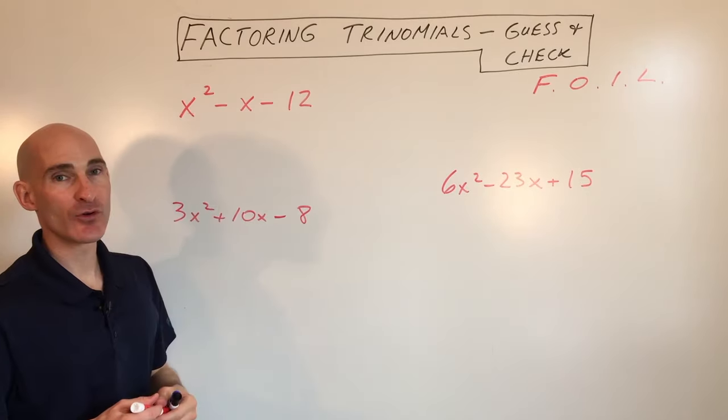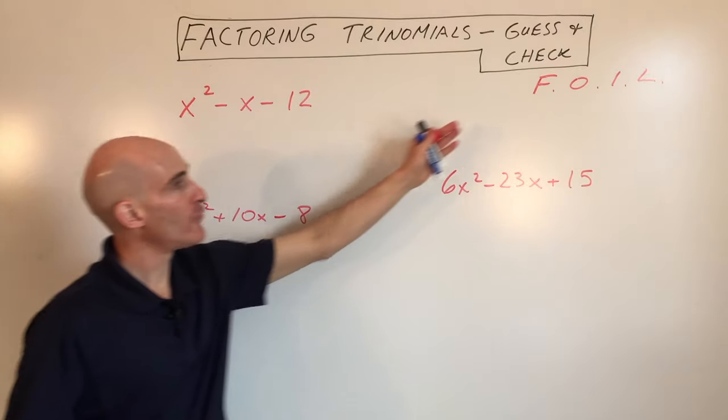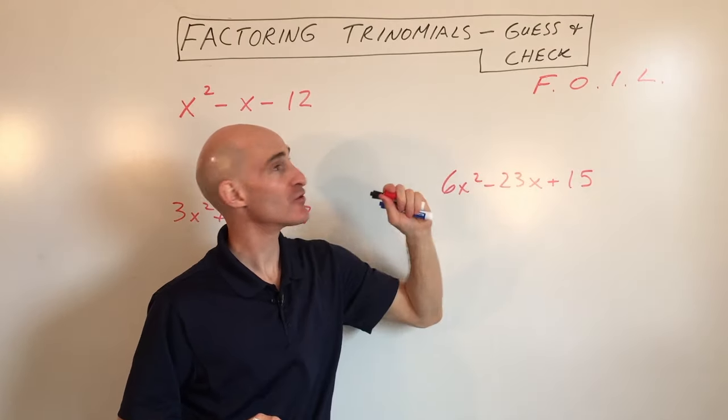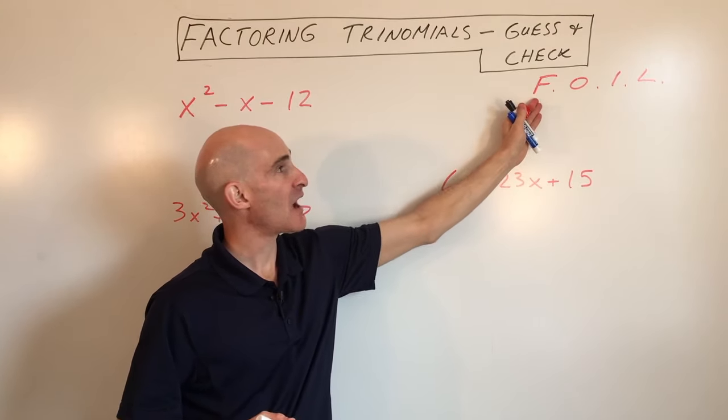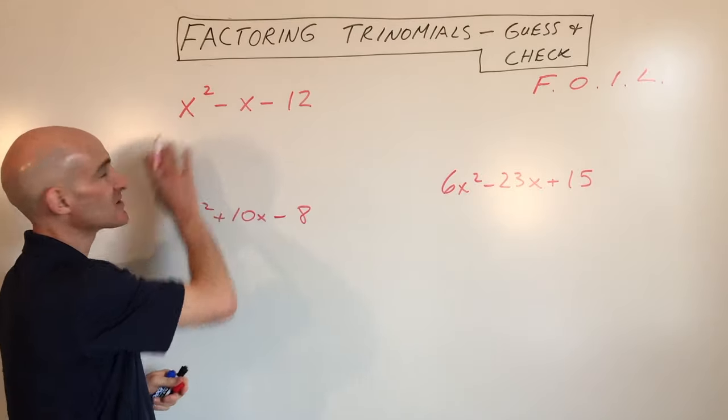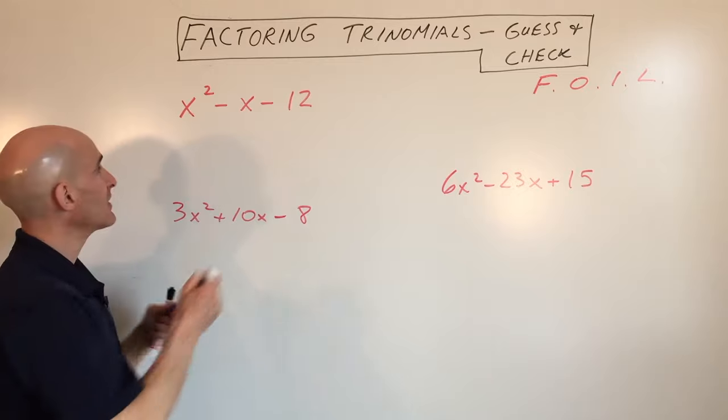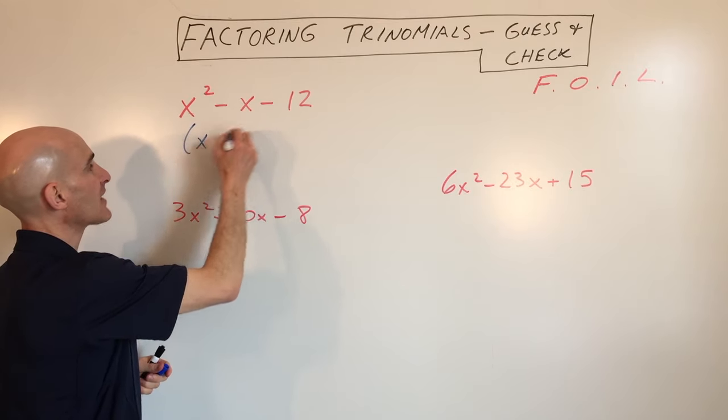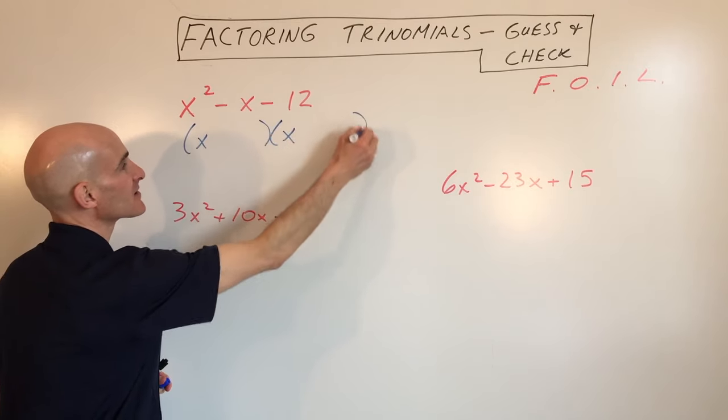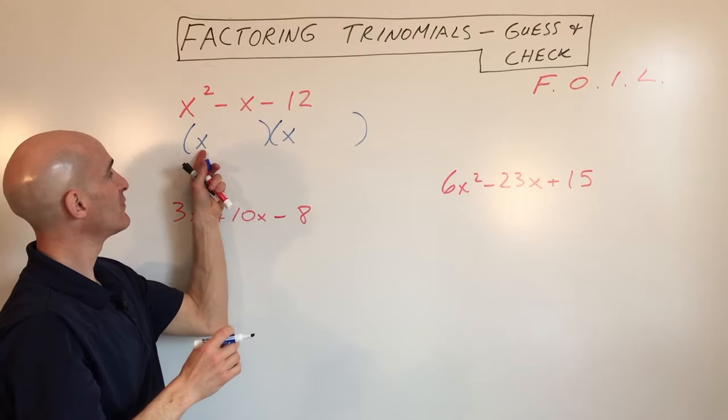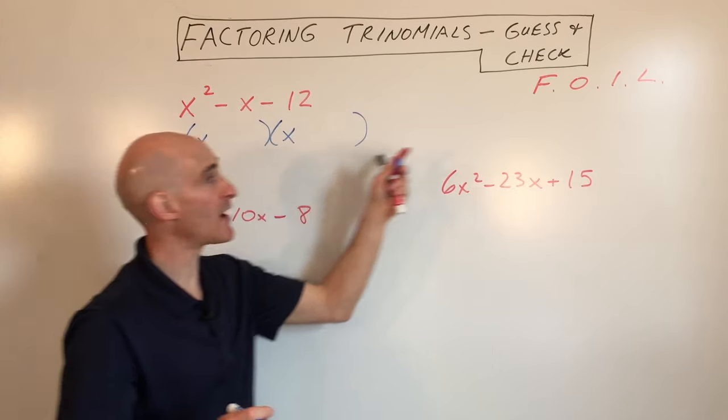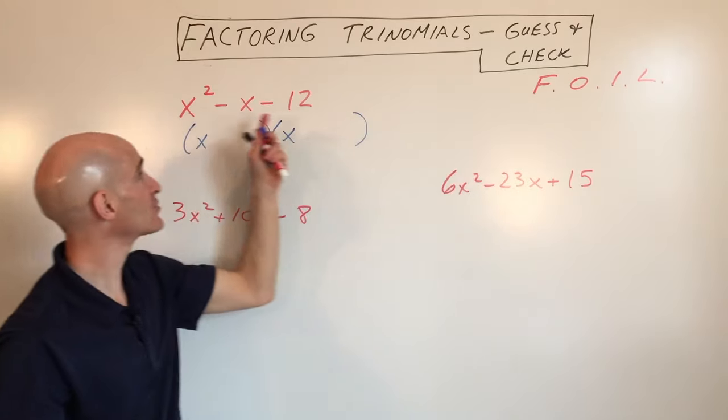So let's take a look at this first example here. The way I use the FOIL method in reverse, sometimes it's referred to, is I say, how do I get the first term x squared? Well, the only way to get x squared, really, in this case, is to have x times x. So x times x, those are the first terms of each of the binomials. That multiplies to give you the first term, x squared.